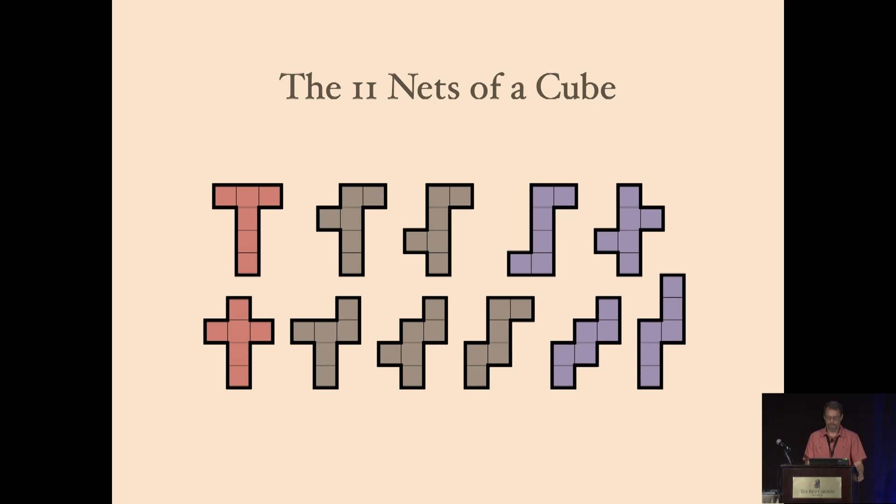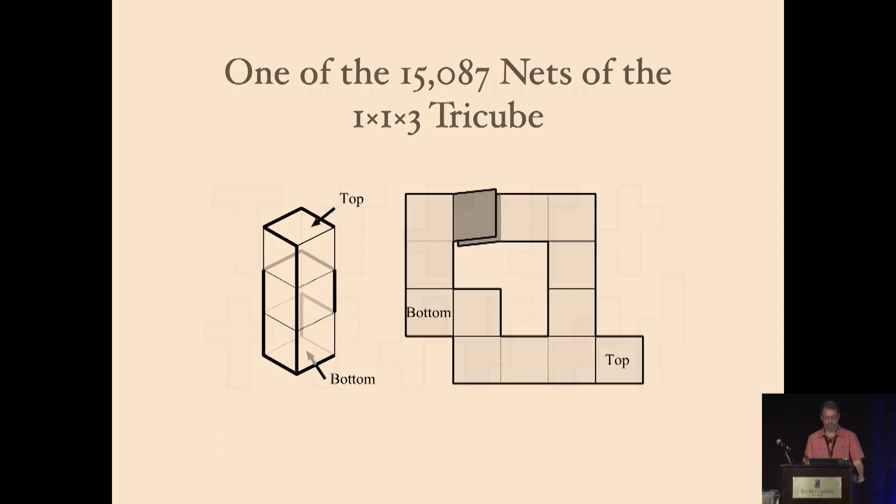Now, as you get to larger and larger polycubes, like the diecube, two cubes glued together, instead of 11 it has 723 unfoldings. That's already a large number. However, the 1x1x3 tricube has over 15,000. This is one of them, and you might notice that it has a problem because it doesn't lie flat in the plane without overlap. It's sort of not a valid unfolding.